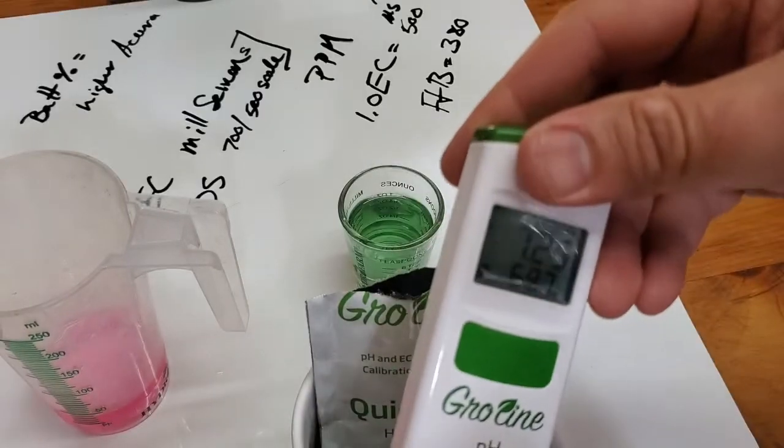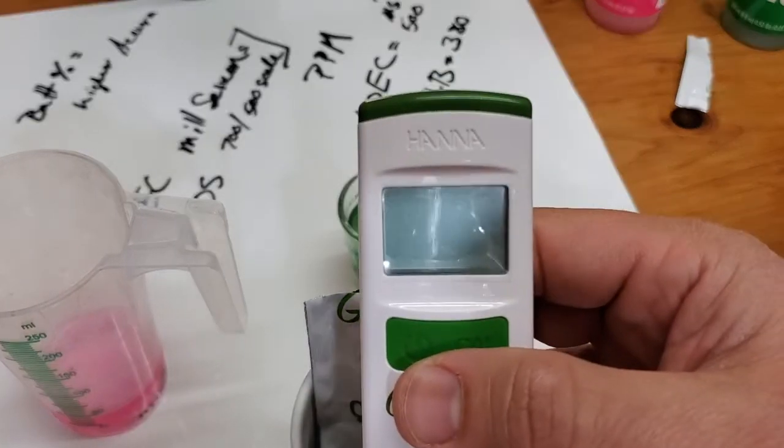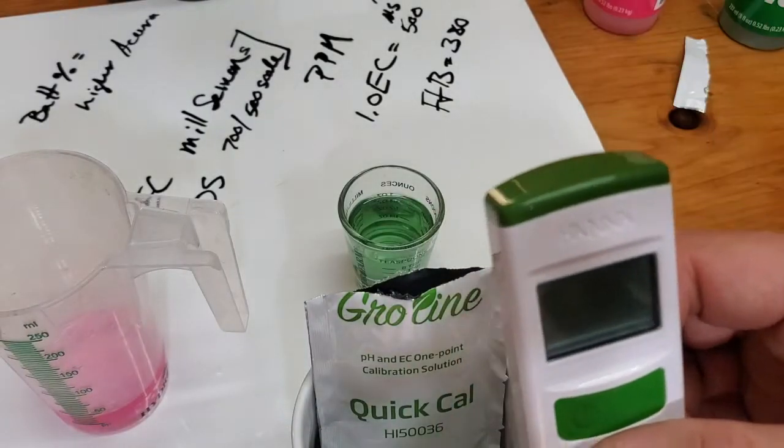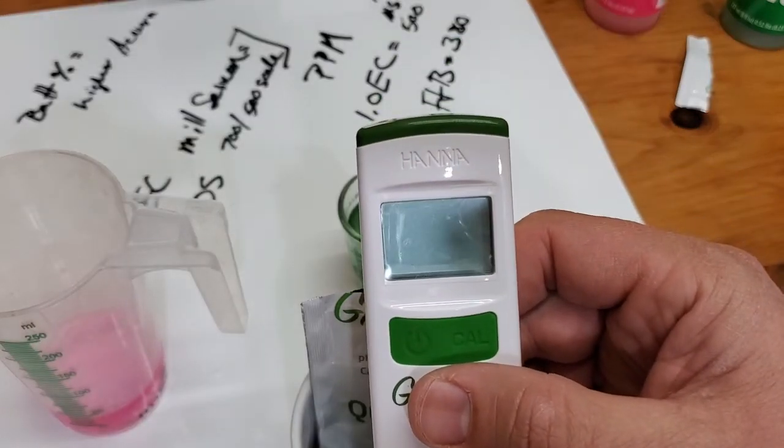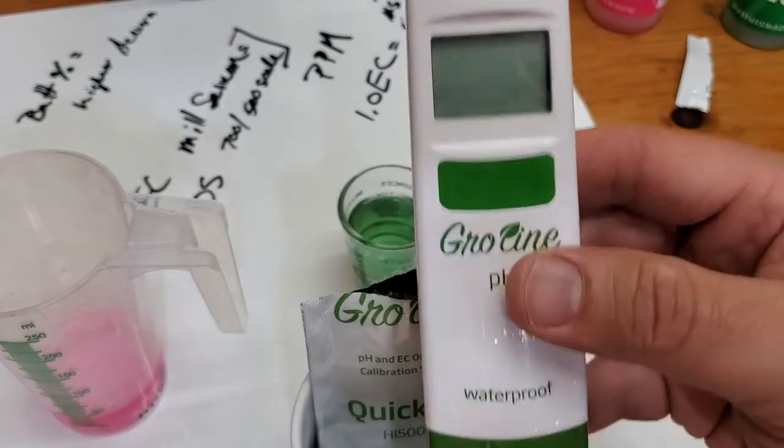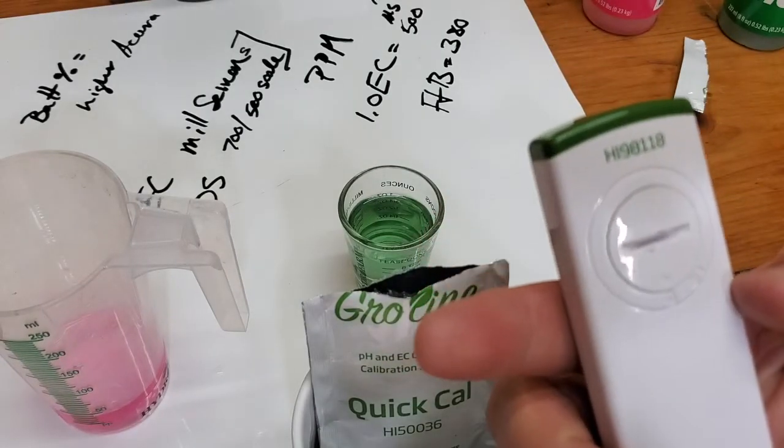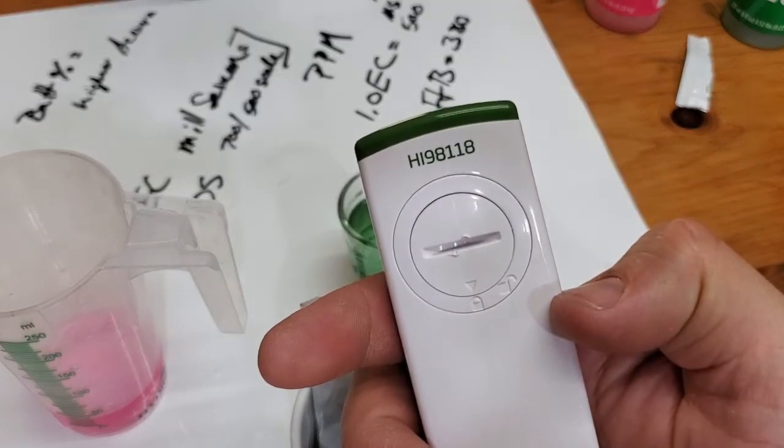After that, get some storage solution, put it in here, ready to go. Doesn't get much easier than that. You got to get used to the Quick Cal solution, have it on hand. You'll want storage solution and cleaning solution on hand as well. But this thing is waterproof - you just throw it in and it's gonna do what you need to do. There it is, the 9811-8.